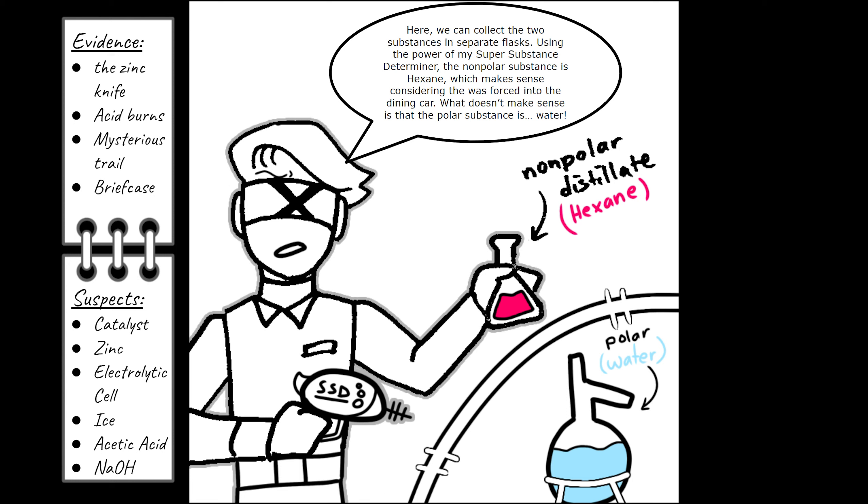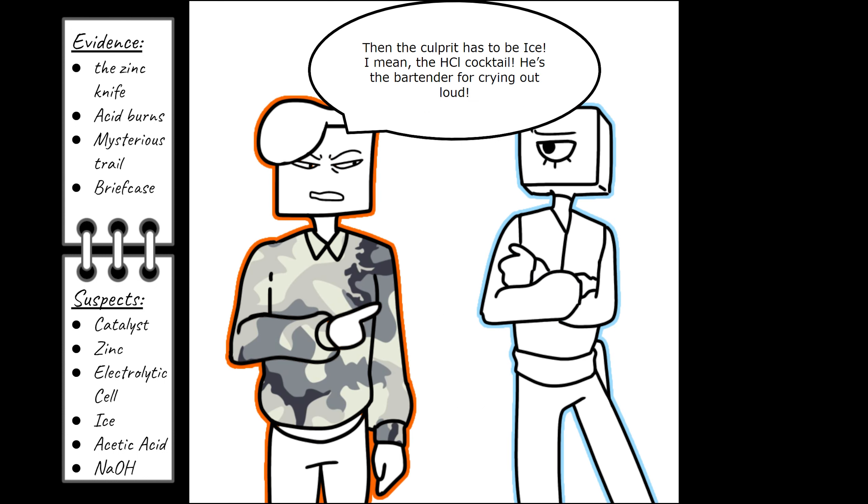Here, we can collect the two substances in separate flasks. Using the power of my super substance determiner, the non-polar substance is hexane, which makes sense considering he was forced into the dining car. What doesn't make sense, however, is that the polar substance is water. Then the culprit has to be HCL. I mean, the HCL cocktail.